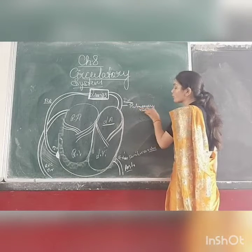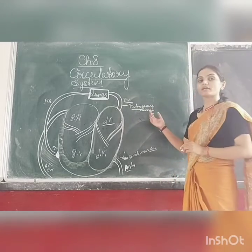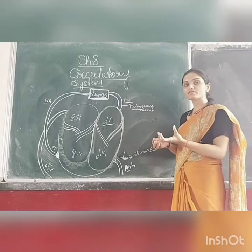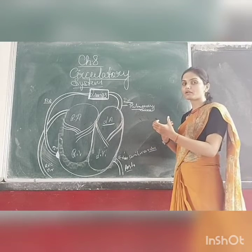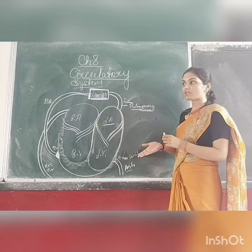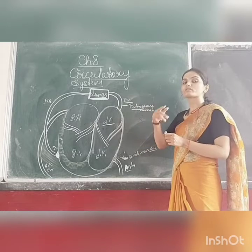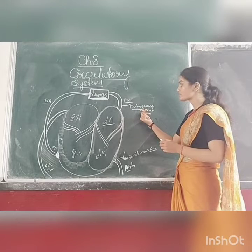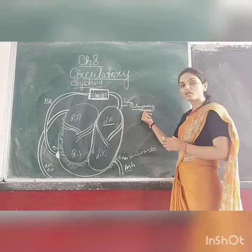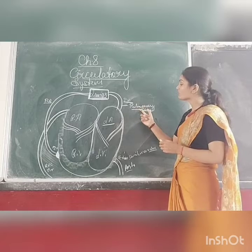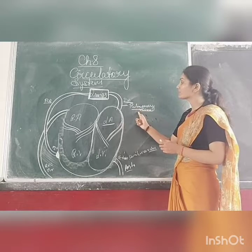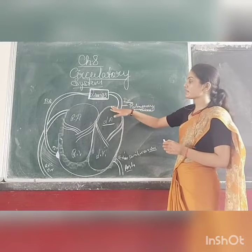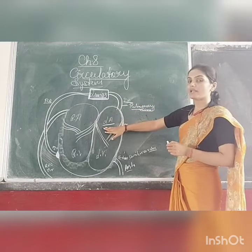Now, how do you want to remember this? You know that the normal function of a vein is to carry deoxygenated blood. But the exception here is the pulmonary vein, because it contains oxygenated blood. So pulmonary vein carries oxygenated blood which is coming from the lungs into the left atrium.